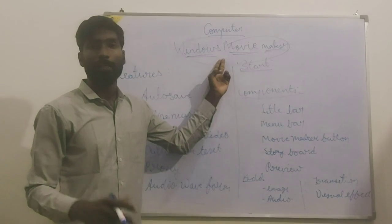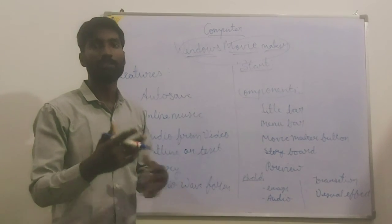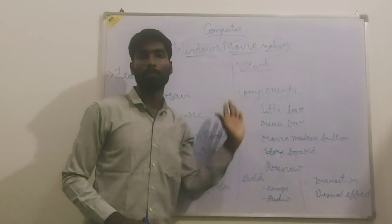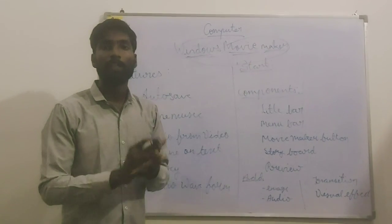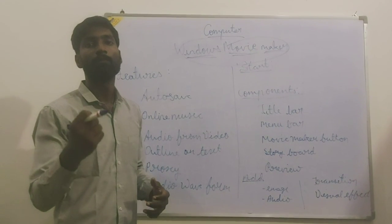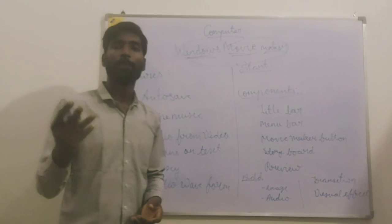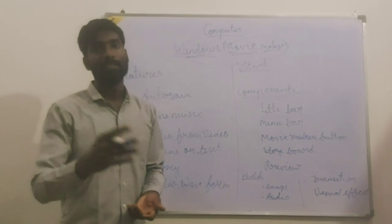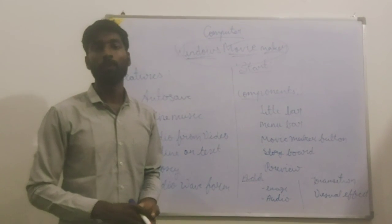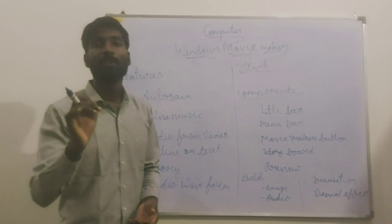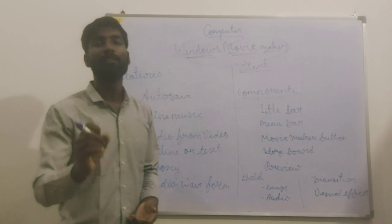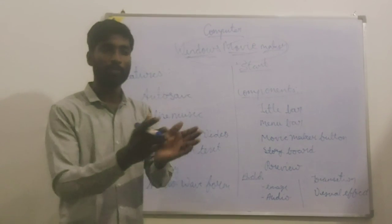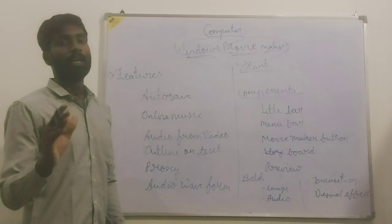In a mobile, we mostly see gallery photos automatically changing in a slideshow. In the same way, we can make a video clip using Windows Movie Maker. In that video clip we can add video, pictures, text, visual effects like color changes, transition effects, and audio. The topmost highlight is that it is a very, very easy software — almost similar to a PowerPoint presentation.